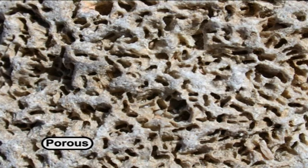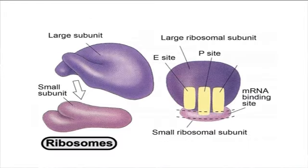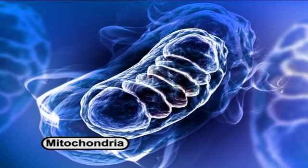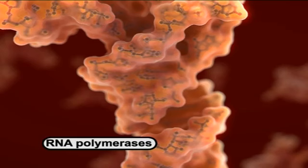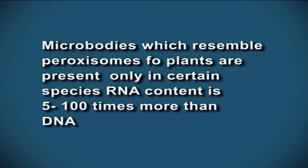The nucleus has a porous nuclear membrane and contains DNA and RNA. Other components of the yeast cell include ribosomes, mitochondria, RNA polymerases, respiratory enzymes, and Golgi bodies. Microbodies which resemble peroxisomes of plants are present only in certain species. RNA content is 5 to 100 times more than DNA.